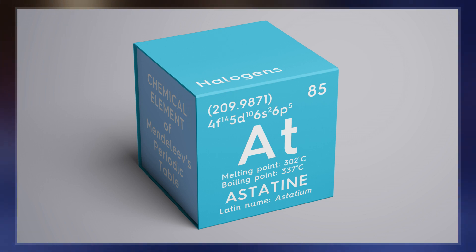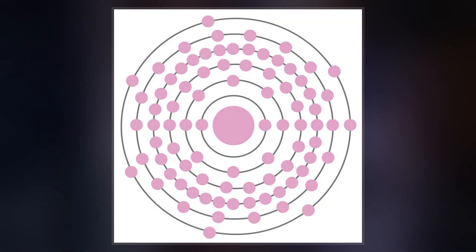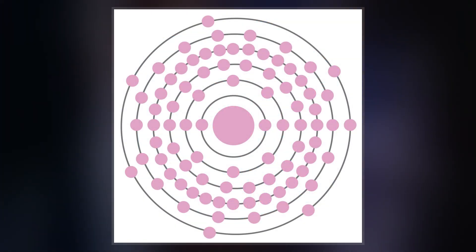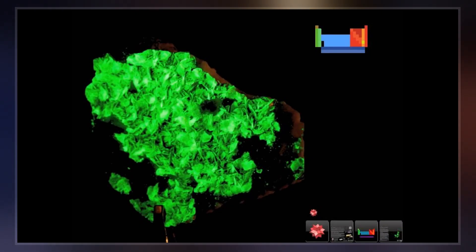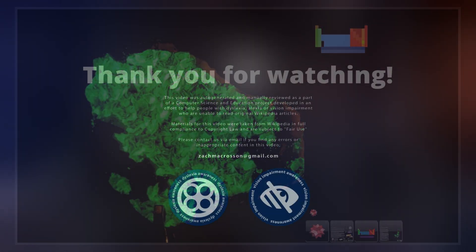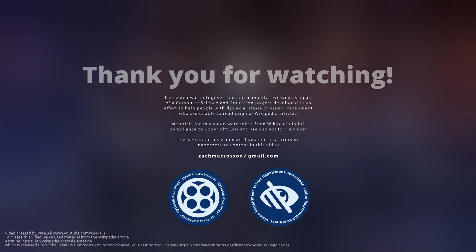Chemically, several anionic species of astatine are known, and most of its compounds resemble those of iodine. It also shows some metallic behavior, including being able to form a stable monatomic cation in aqueous solution. The first synthesis of the element was in 1940 by DeLar.